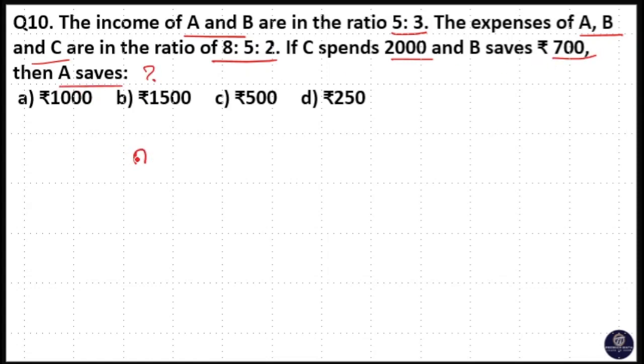So we have A, B and C and their income. Income of A and B in the ratio 5 is to 3. And expense of A, B, C are in 8 is to 5 is to 2 ratio.